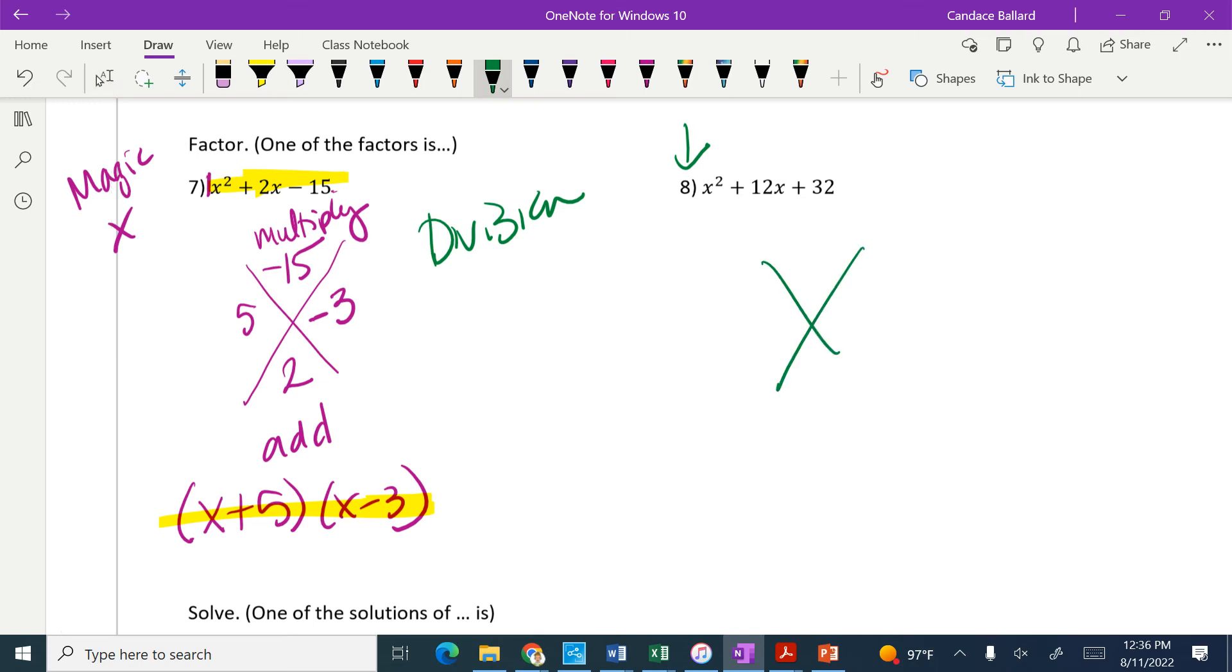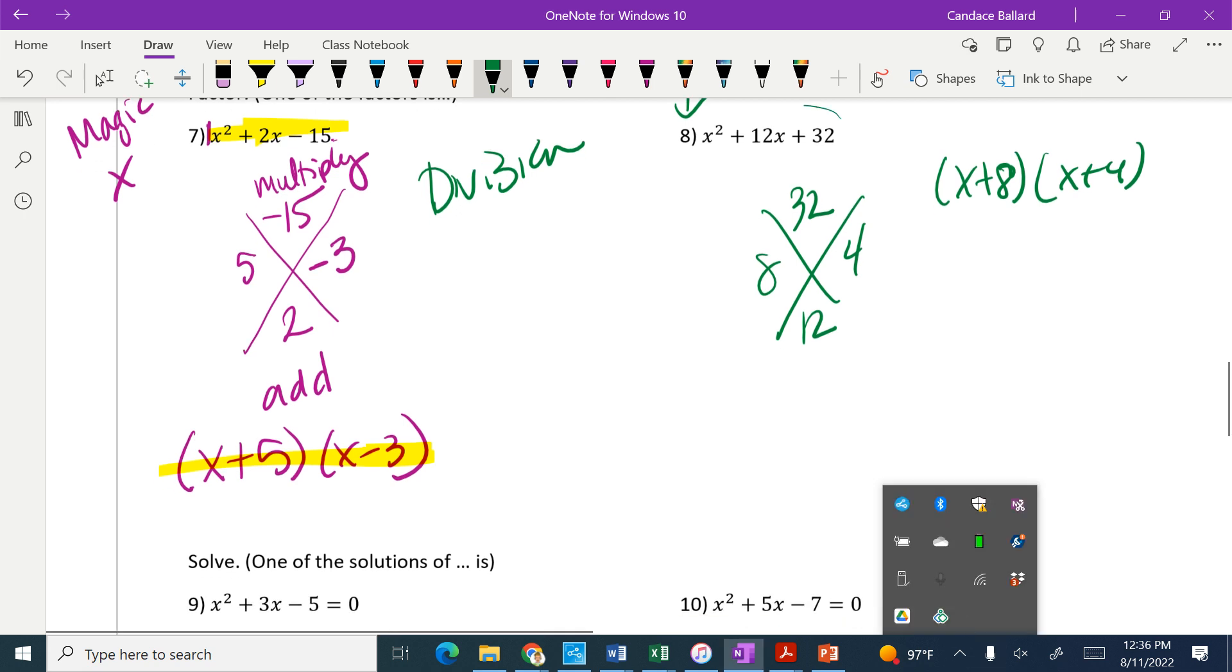What's going to go in the top of the magic x and in the bottom? Good. What multiplies to 32 and adds to 12? x plus 8, x plus 4. Does it matter what order I do that in? No. Okay, if I keep going and I foil that back out, doesn't that get me back to this?